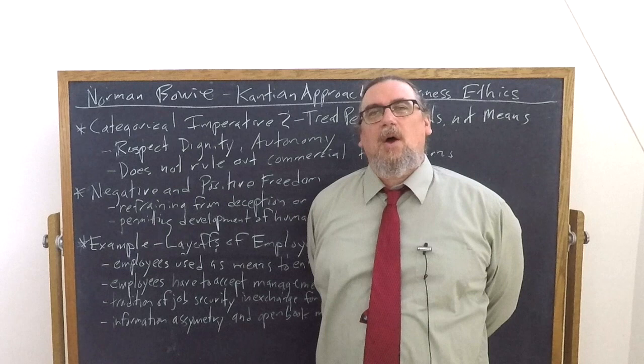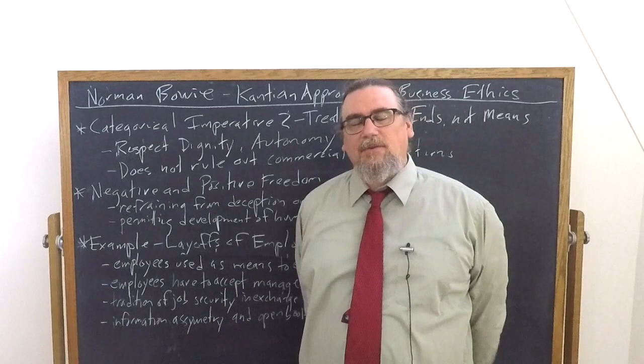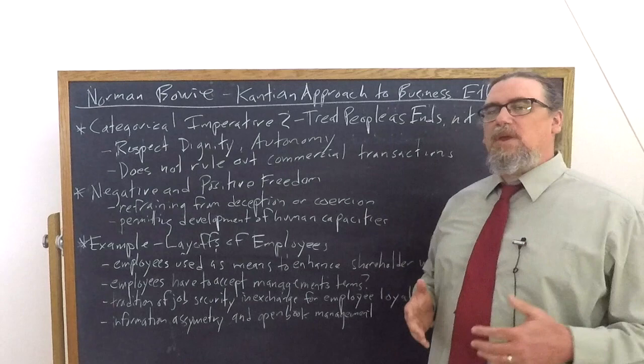Kant's second formulation of the categorical imperative runs: act always so as to treat humanity, whether in the person of yourself or that of others, never as a mere means, but always as an end. So it's a rather complicated formula, but it can be reduced down to treating people as ends in themselves, not merely as means.